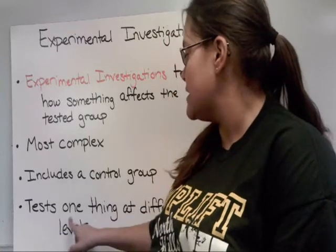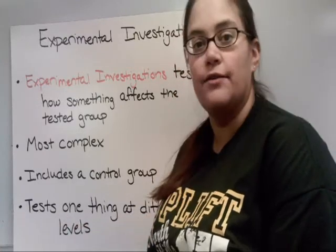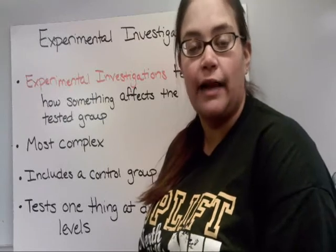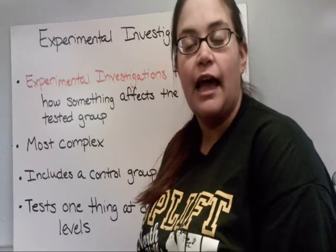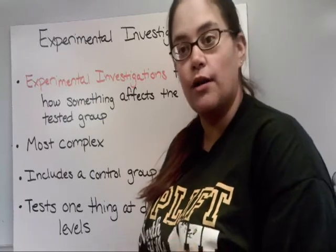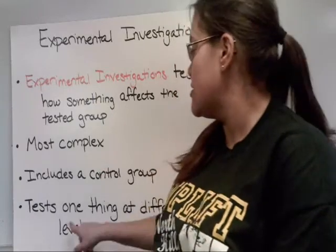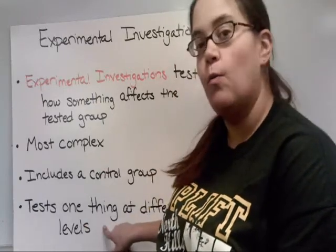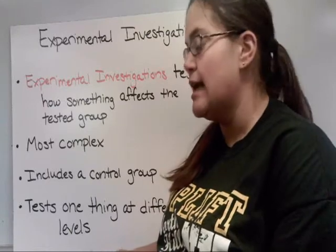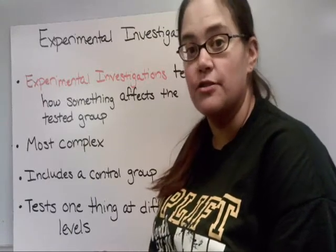An experimental investigation tests one thing at different levels. For example, you may be testing the amount of water a plant receives, and you would test no water, a little water, some water, and a lot of water. You're testing water, just at different levels — and that's what makes this an experimental investigation.